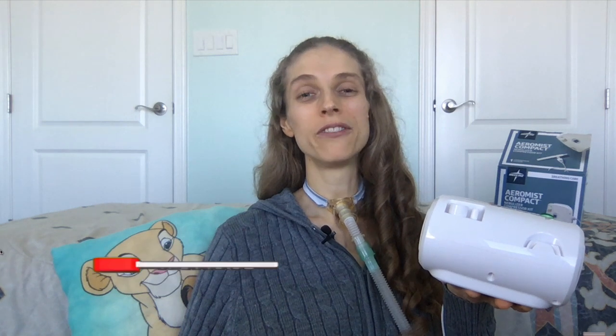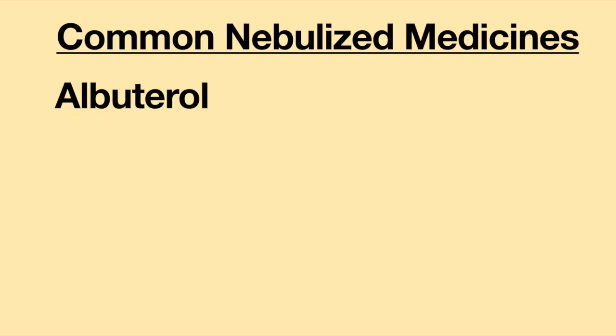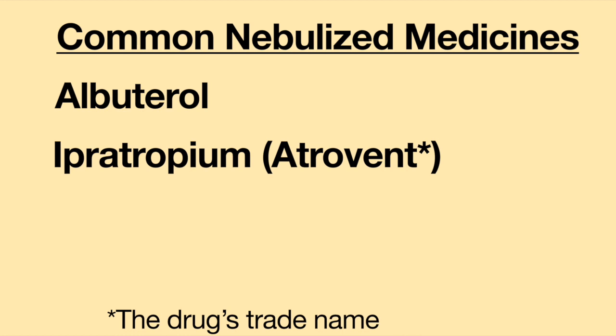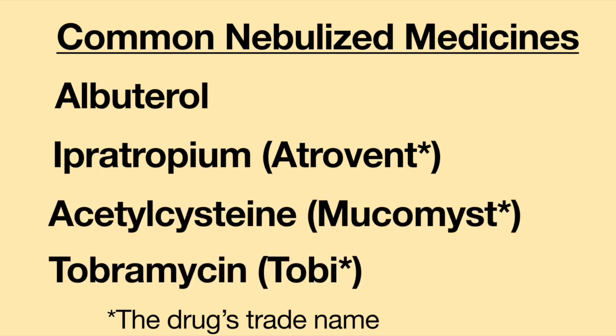A nebulizer is a small device which uses compressed air to deliver medicine or saline in the form of an inhaled mist into the airways. The delivery system can be via inhalation through the mouth or via a tracheostomy tube. Some of the most common medicines used in the nebulizer are albuterol, ipratropium, acetylcysteine, and tobramycin. For people who have a tracheostomy and use a ventilator, saline is frequently used. Saline will help loosen the mucus and break it up, helping keep your airways from developing a mucus plug.